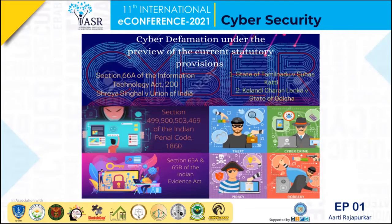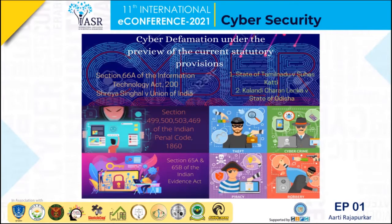As per Section 65A, the contents of an electronic record may be proved after the amendment of the Information Technology Act. An electronic record, if it is printed, stored, shared, copied, or recorded in an optical and magnetic media and produced by a computer, shall be deemed to be a document and admissible in the court of law as evidence under Section 65B of the Indian Evidence Act.